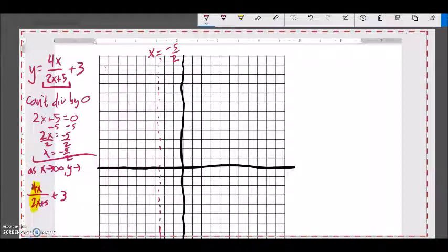And the x's would cancel out, like 4 times a million divided by 2 million is just 4 divided by 2. So, 4 divided by 2, so this part right here tends to 2, and then we're going to add 3 to it, which is 5. So, as x approaches infinity, y tends to 5.